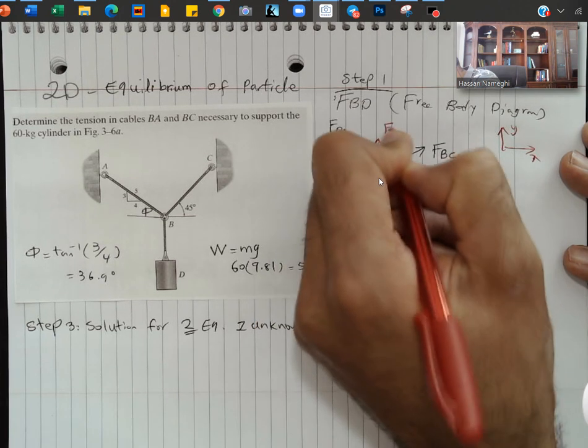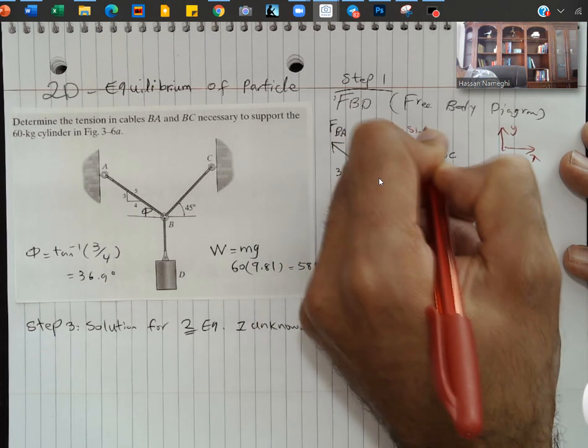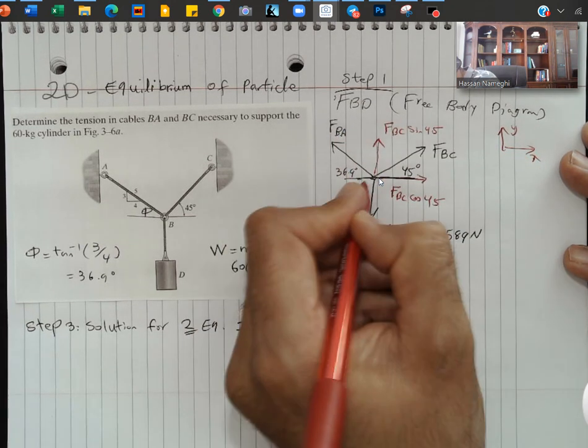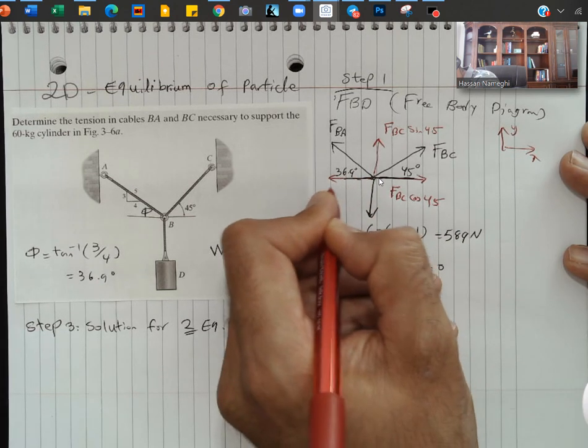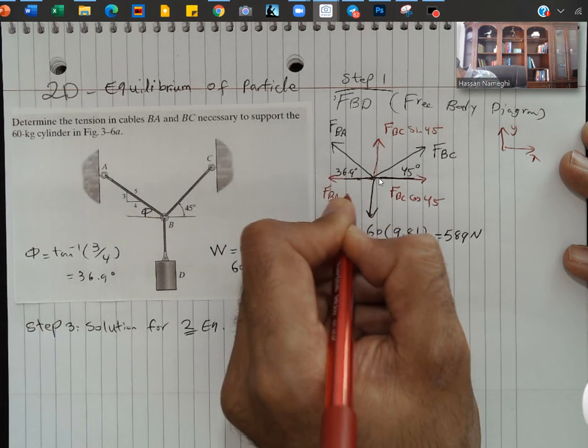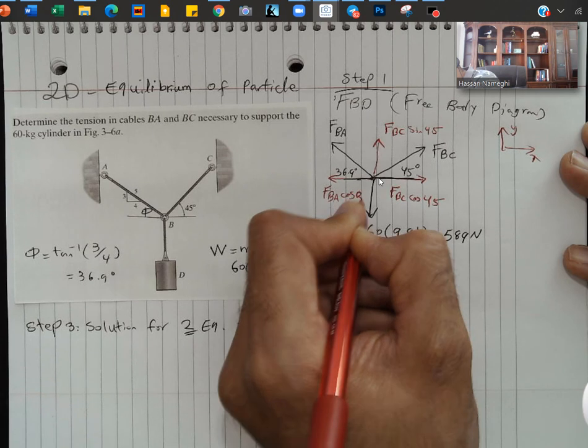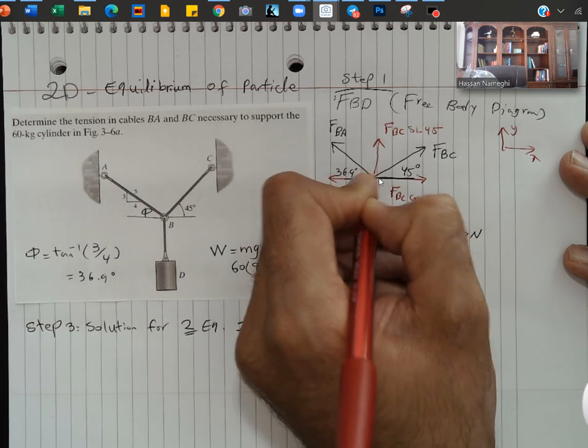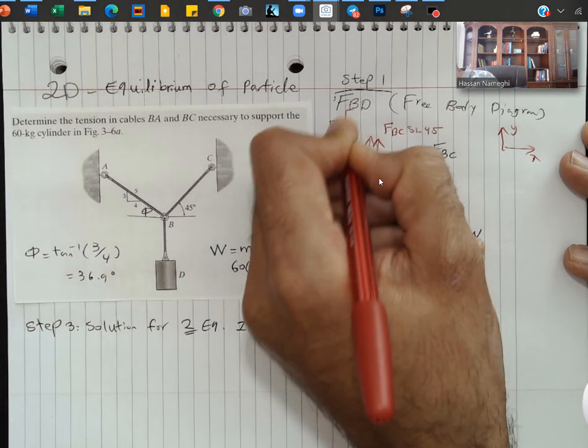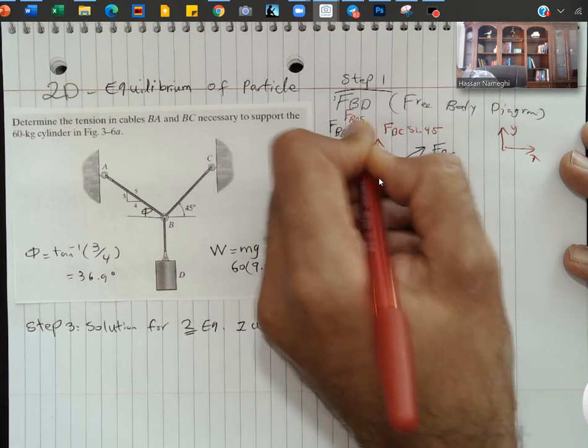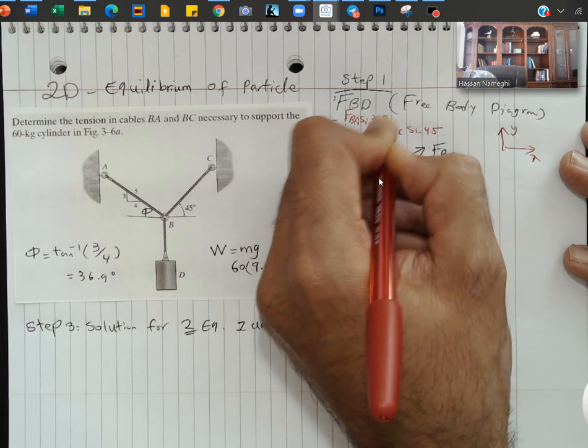The opposite will be FBC sine 45. I'm going to do the same thing for FBA. FBA on the X will be FBA cosine 36.9, and then on the Y will be FBA sine 36.9.